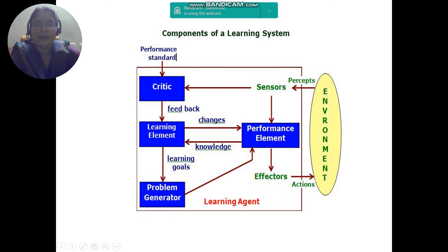The critic criticizes the performance to drive more improvement. The learning element improves the performance element by sending feedback and necessary changes. The performance element is directly connected to the problem generator. The learning element is also connected to the problem generator by describing the learning goals and improving some actions.